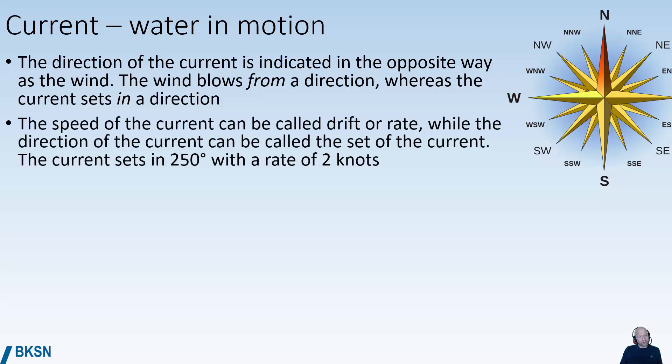The speed of the current can be called the current drift, or current rate, while the direction of the current is often called the set of the current. For instance, the current sets in 250 with a rate of 2 knots. This means that the water is moving in a direction 250 at a speed of 2 knots.